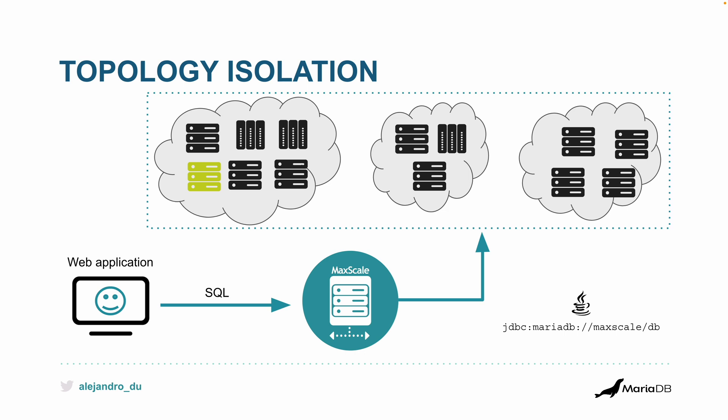All of a sudden you have the same capacity and topology working as before, automatically. This is how you do read-write splitting, and how MaxScale allows you to use more complex topologies that are completely isolated and evolve without affecting web applications or applications in general.